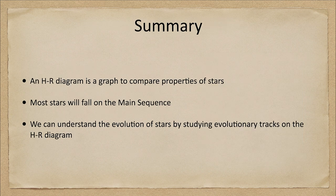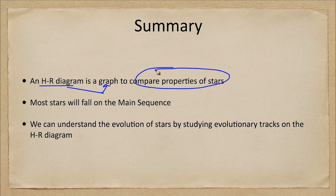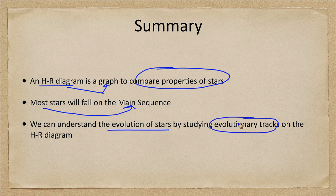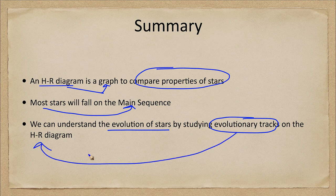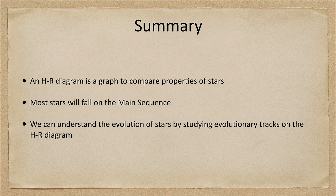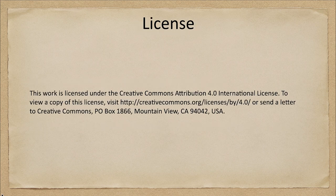To summarize: we looked at the HR diagram as a graph used to compare the properties of stars. Most stars fall on the main sequence, and we can use this to study the evolution of stars by looking at their tracks — how their temperature and luminosity change on an HR diagram. That concludes this lecture on the HR diagram. We'll be back next week for another special topic in astronomy, so until then have a great day everyone and I will see you in class.